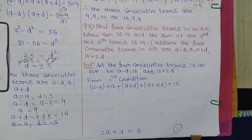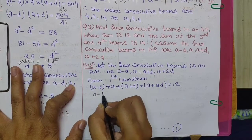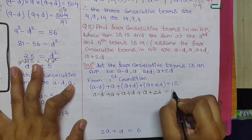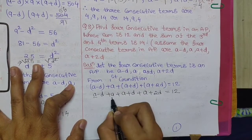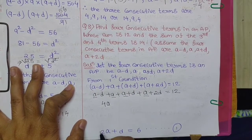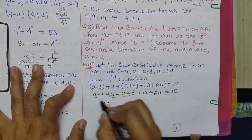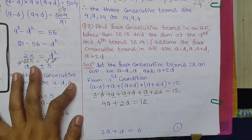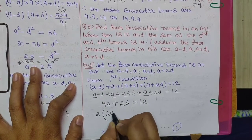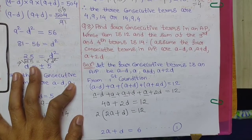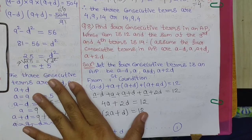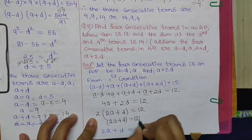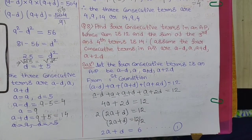From the first condition: (A − D) + A + (A + D) + (A + 2D) = 12. Collecting A terms: 4A. The −D and +D cancel, leaving 4A + 2D = 12. Taking 2 as common: 2(A + D) = 12, so A + D = 6. This is Equation 1.